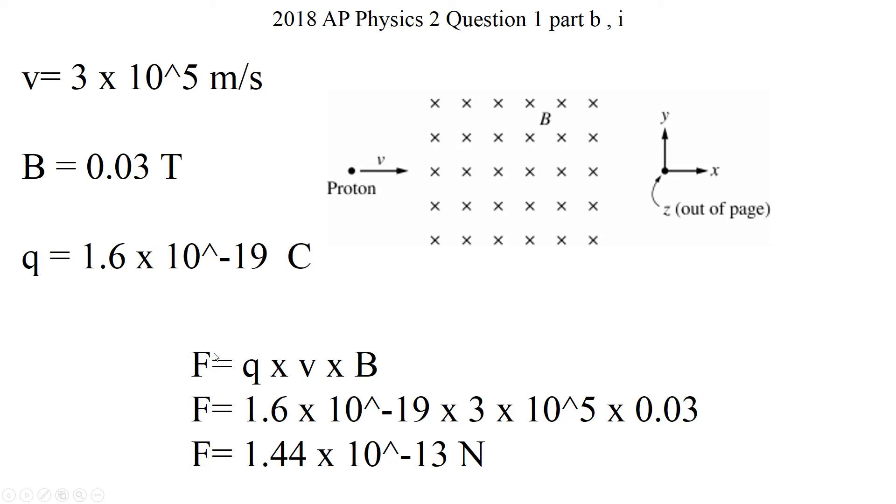Well, this is simply magnetic force equals charge times velocity times magnetic field. So V is given, charge of a proton is a constant. And you could find this in the equation sheet. And if you just multiply all of them, then you're going to find the force, magnetic force acting on that proton as 1.44 times 10 to power negative 13 newtons.